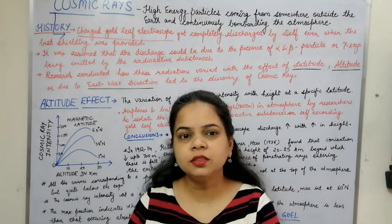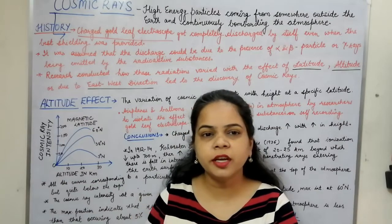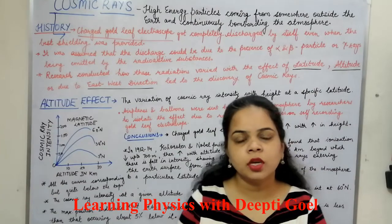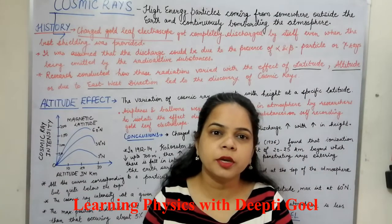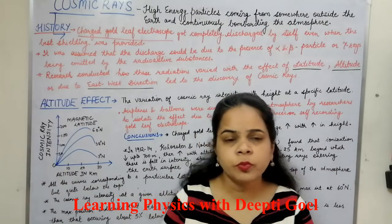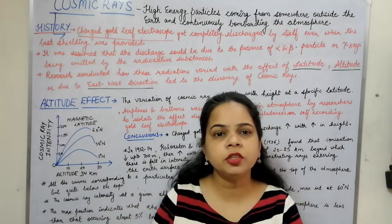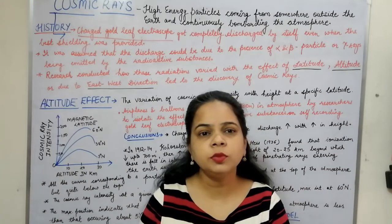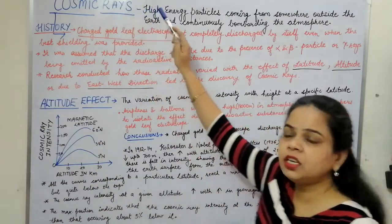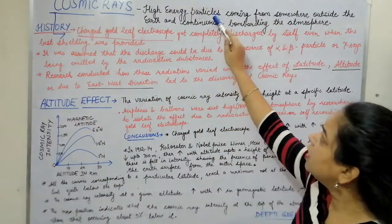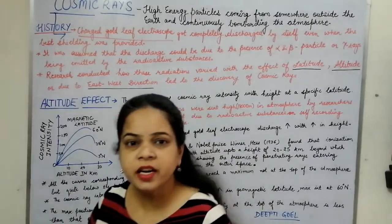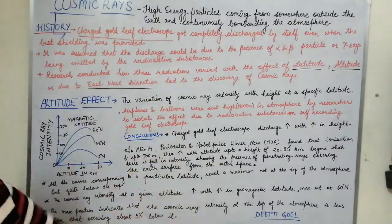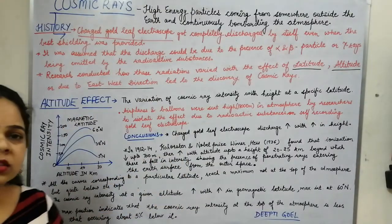Today, we shall discuss about Cosmic Rays. What are Cosmic Rays? How are they found? What is the history behind the discovery of Cosmic Rays? First of all, let us see the definition. Cosmic Rays are generally high-energy radiations or particles which are coming from somewhere outside the Earth and are continuously bombarding the Earth's atmosphere.